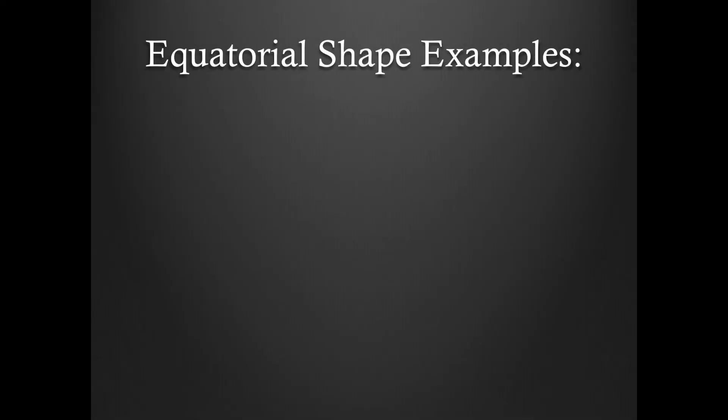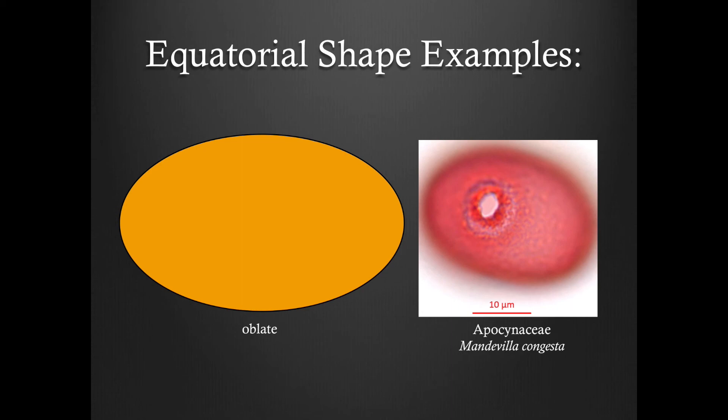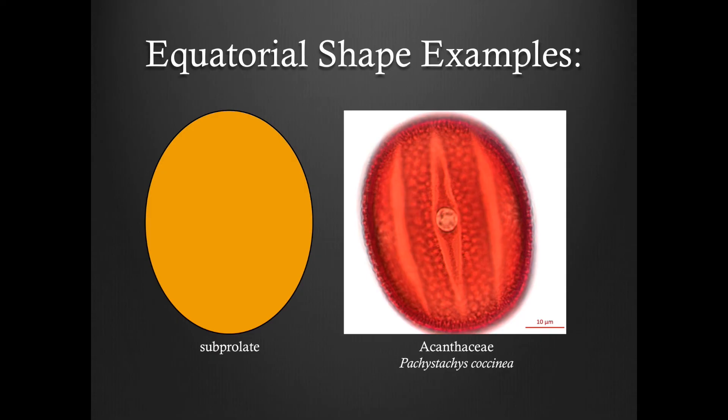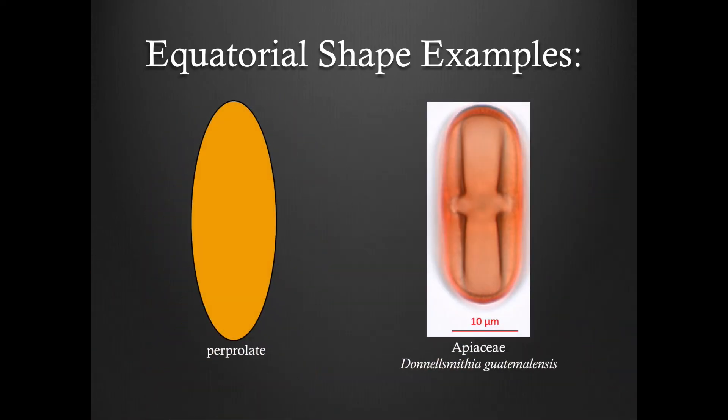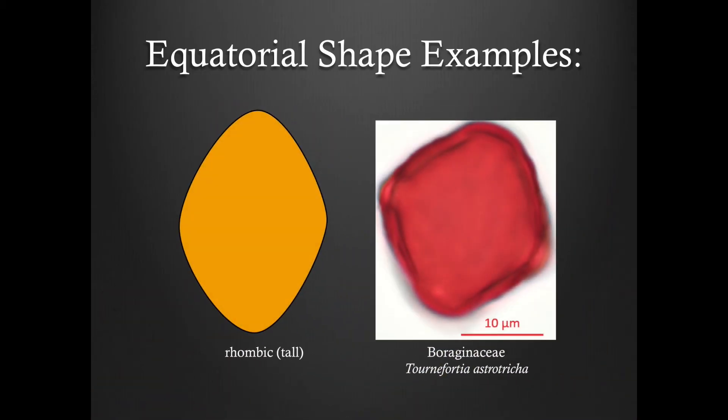Now here are some examples. Here is an oblate grain. Here we have a subprolate grain. Here is a perprolate grain. And here we have a rhombic tall grain.